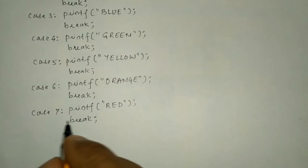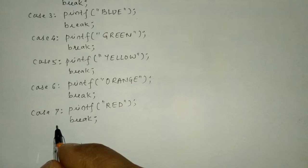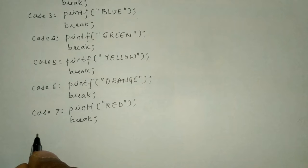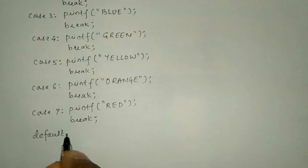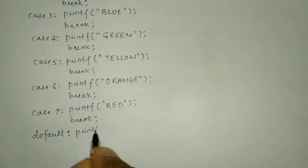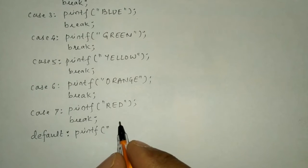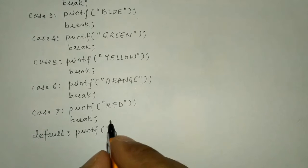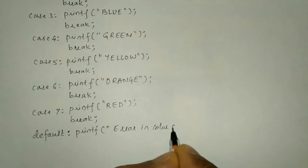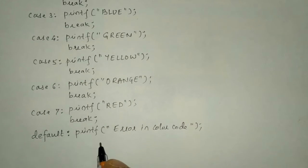We have now covered all seven colors of the rainbow. What if the user enters any number other than one to seven? In that situation we execute the default statement. I use the keyword default, then write a colon, and write a printf statement with the error message 'error in color code' in double quotation marks, then put a semicolon.